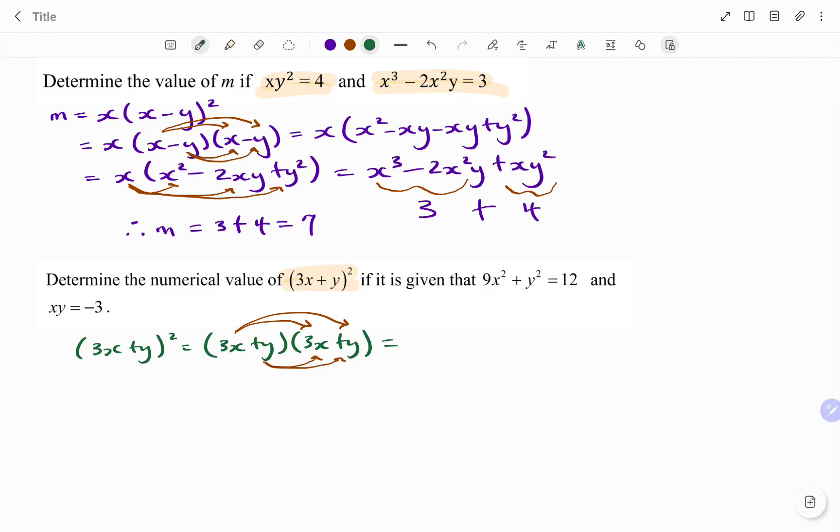So therefore, I have 3x squared. Now, that's going to be 9 because 3 times 3 is 9. So I'll change it to 9x squared. Then I have plus 3xy plus 3xy plus y squared. That's the same as if I collect like terms. That's 9x squared plus 6xy plus y squared.